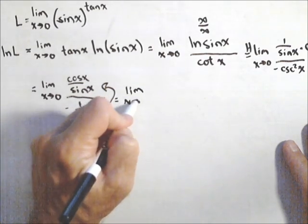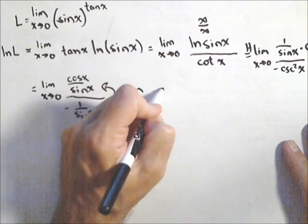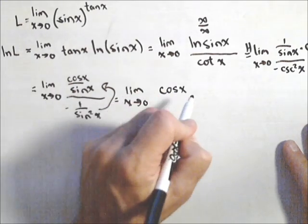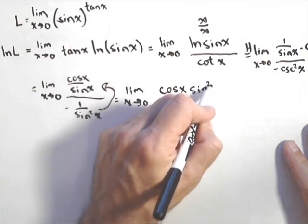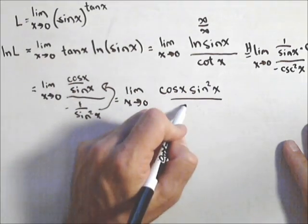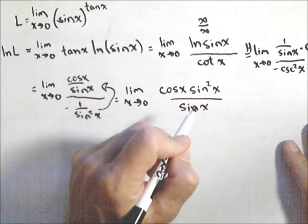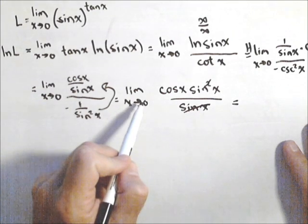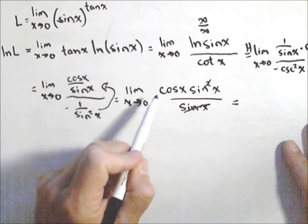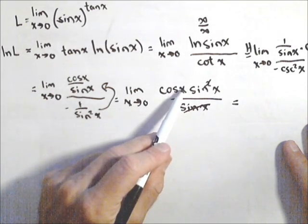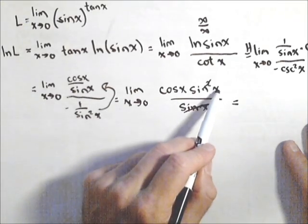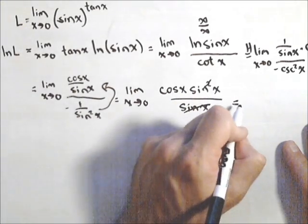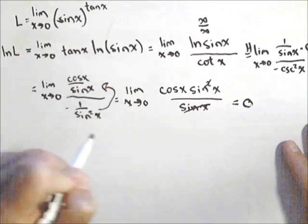Let's get the limit as x goes to zero. Cosine x, sine squared x, all over sine x. Cancel out one of those with the denominator. We can now plug and calculate the limit because we have cosine of zero times cosine of zero, which is one times zero or zero.